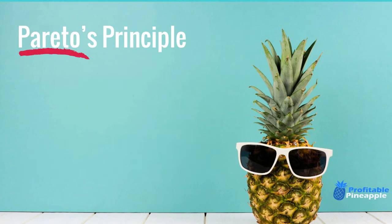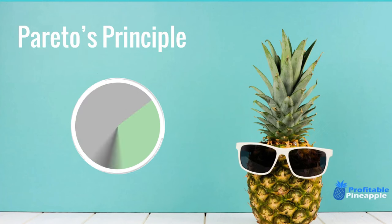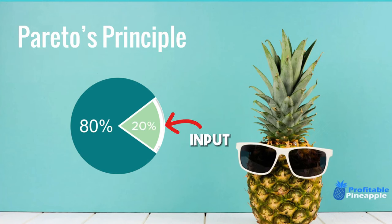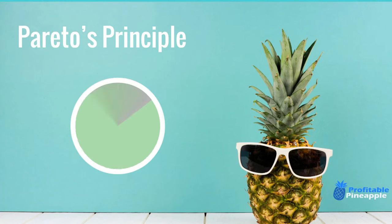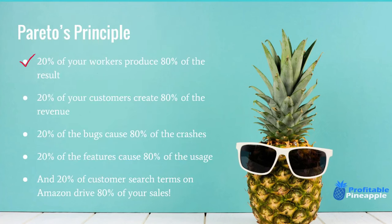If any of this sounds like you, you are completely normal. The simple strategy I'm going to teach you today will help you make more sales, increase your organic rank on Amazon, while also decreasing your ad spend inside of Amazon PPC. I can guarantee that this is a step your competition is not doing. It's simply mining and isolating the 20% of search terms that are producing 80% of your results. You've probably heard of Pareto's Principle — 20% of your input creates 80% of your results.